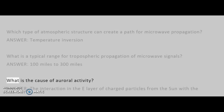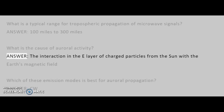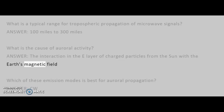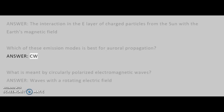What is the cause of auroral activity? Answer: the interaction in the E-layer of charged particles from the Sun with the Earth's magnetic field. Which of these emission modes is best for auroral propagation? Answer: CW.